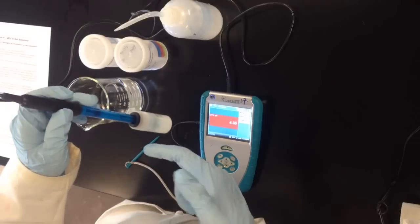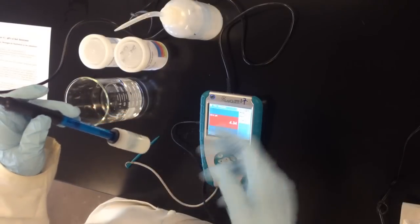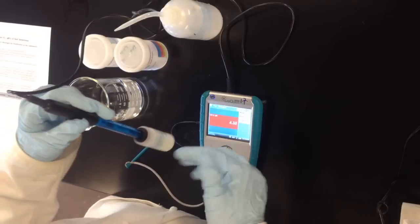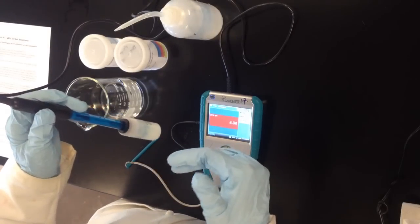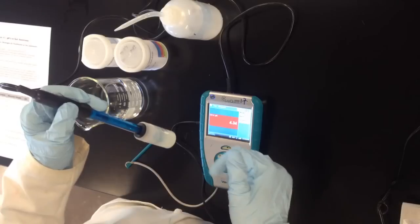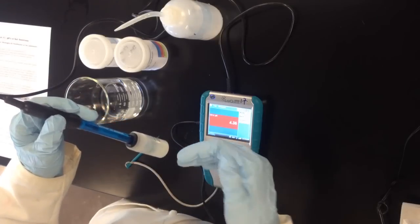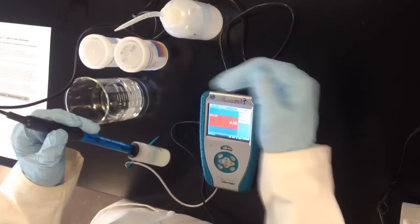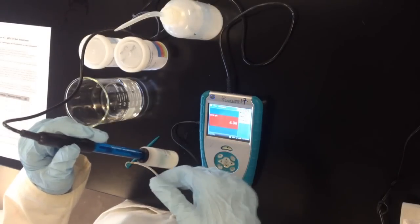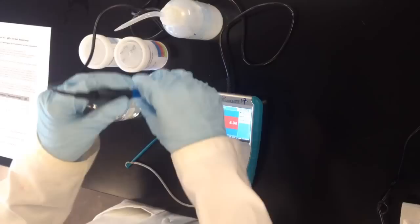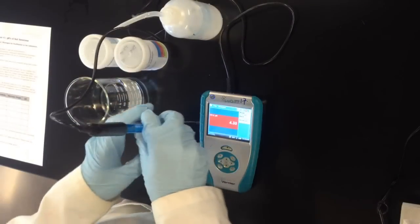The pH probe is basically just an electrode and the electrode degrades over time and gets bumped around, so its baseline voltage can shift over time. We need to calibrate the pH probe from time to time so that we get consistent pH readings over time. The probe has no knowledge of what its pH reading should be, so we need to tell it what its pH reading should be.